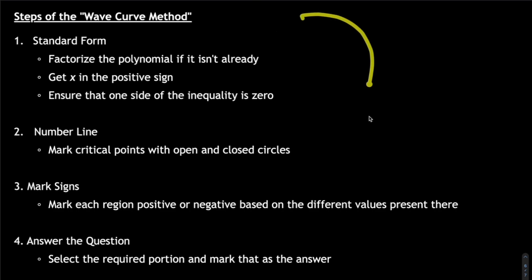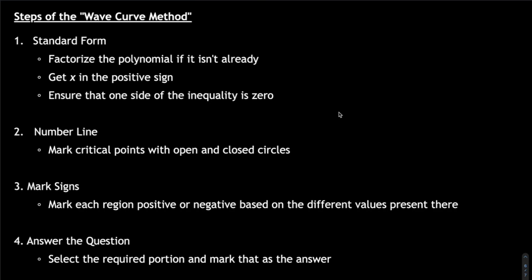Finally, check whether the question wants greater than or less than zero, and finalize your range of x accordingly. That's the entire wavy curve method — not too complicated, just follow it step by step. Examiners can throw you off with trigonometry, like 3sin(x) + 6 > 0, or even calculus where you differentiate a polynomial and determine where the slope is positive or negative. This method has multiple applications across different chapters. Next video, we'll look at absolute value, modulus functions, or radical functions. That's all for today!